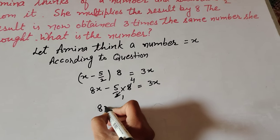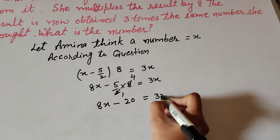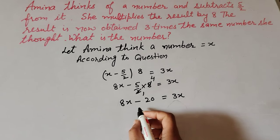8x minus 5 multiply by 4 is 20, so 8x - 20 = 3x. Now we're transposing -20 to right hand side and